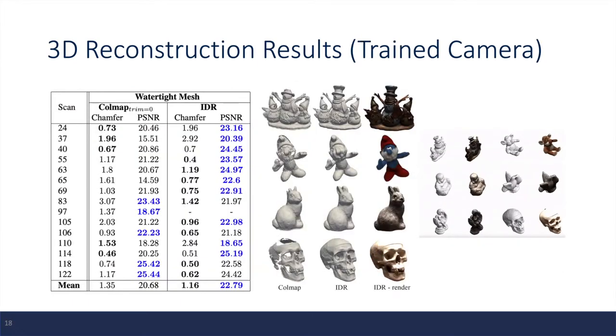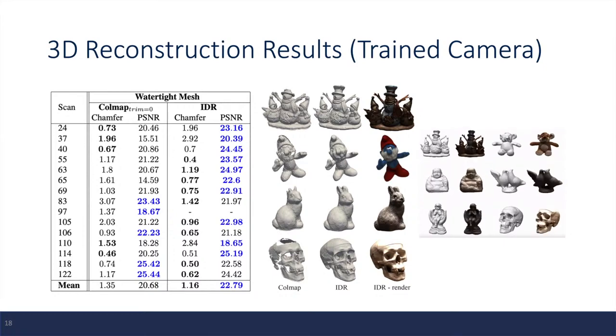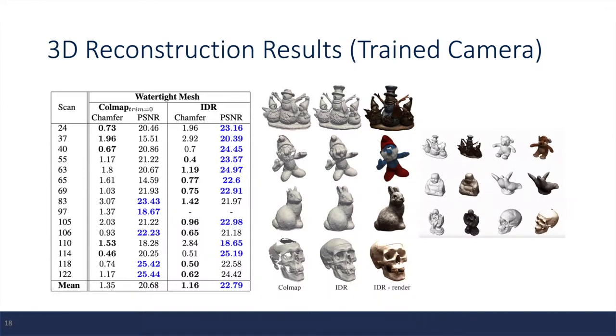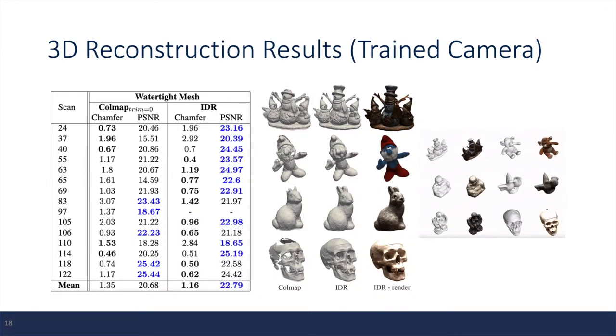The second experiment is 3D reconstruction based on trained cameras. In this case, the authors initialize the cameras roughly and try to optimize the camera parameters throughout the training process. And we can see in the table, the proposed method has lower Chamfer distance and higher PSNR on average.